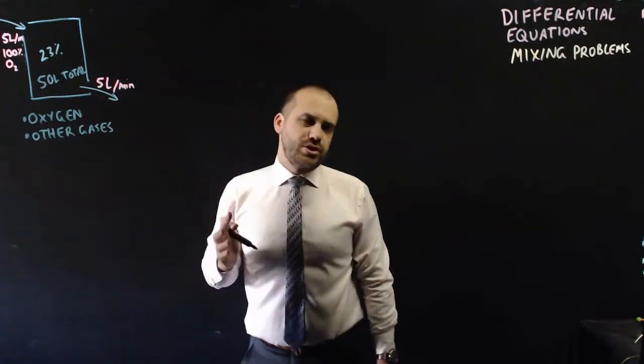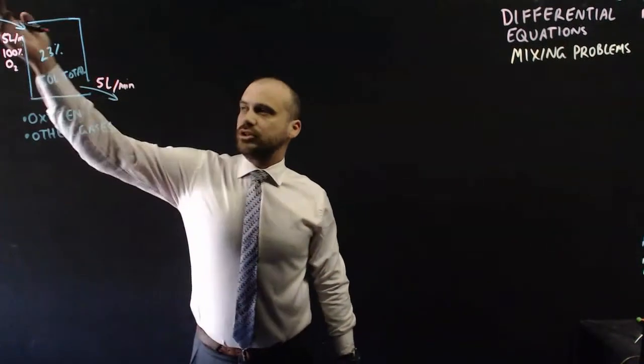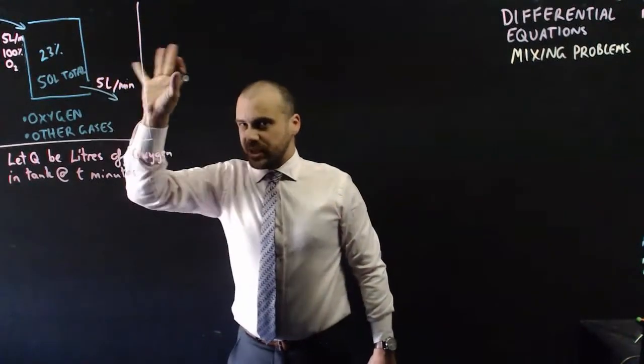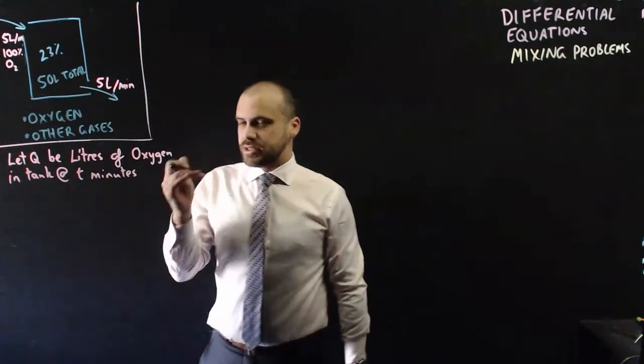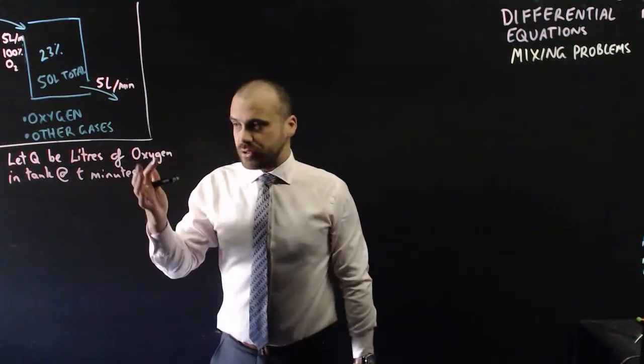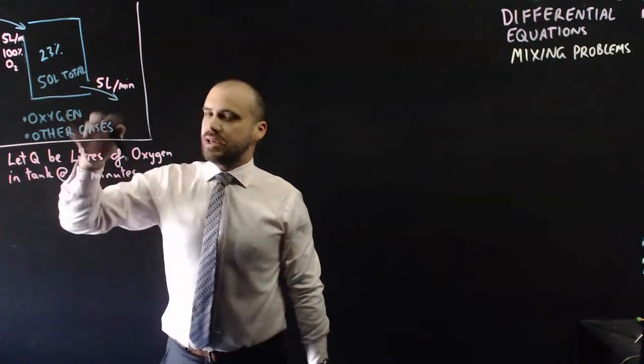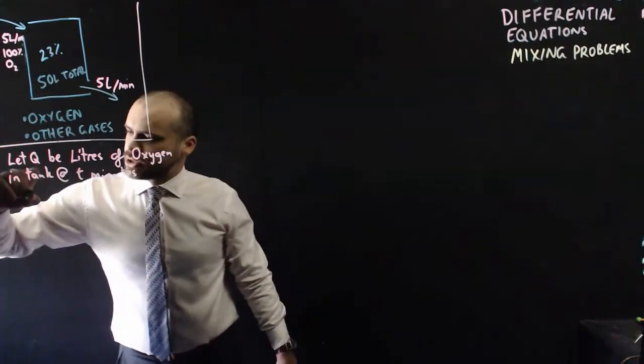All right, so I don't have any question for you at the moment. All I want to do is set up a differential equation that models this. Now we've been talking about percentages and things like that, but we really don't want to talk percentages with these mixing problems. Instead, we want to talk about the amount of oxygen, the Q litres of oxygen, in the tank at t minutes.